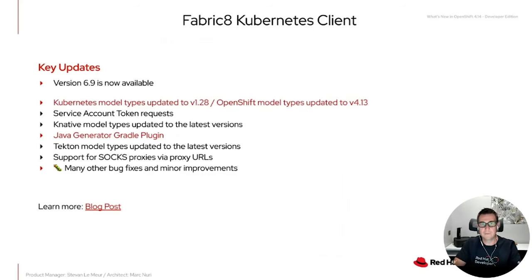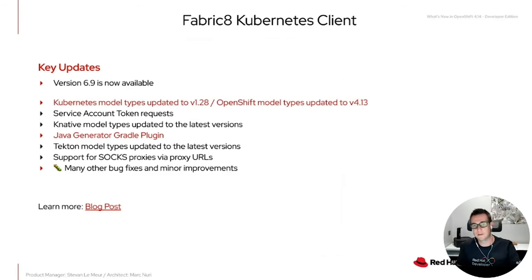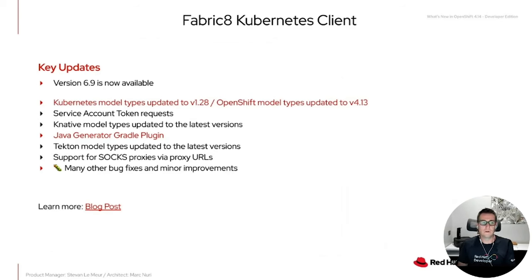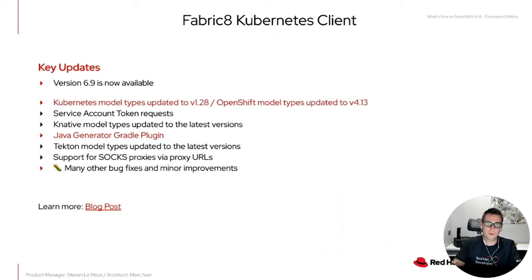For Fabric8 Kubernetes client, version 6.9 is available. The Kubernetes model types have been updated to version 1.28, and the OpenShift model types updated to version 4.13. There's also work done on the Java generator Gradle plugin and many other things you can learn about on the blog posts announcing the Fabric8 Kubernetes client releases.